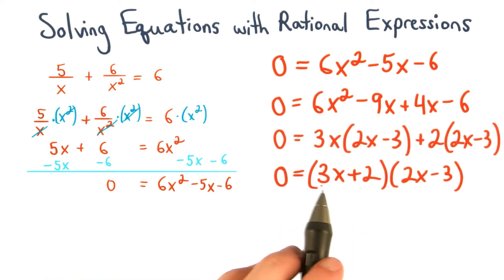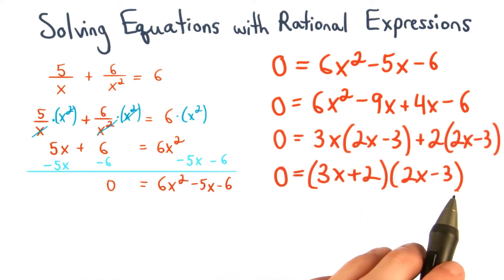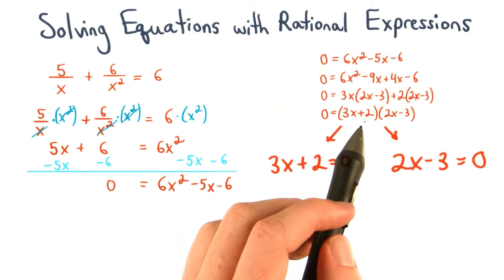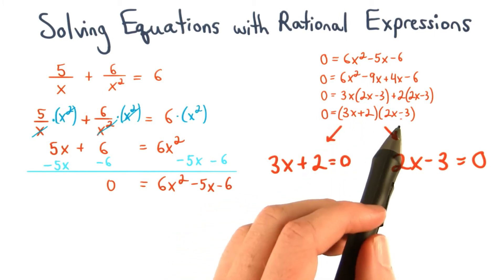This gives us factors of 3x + 2 and 2x - 3. Now that the right-hand side of our equation is factored, we can use the zero product property and set each factor equal to 0.